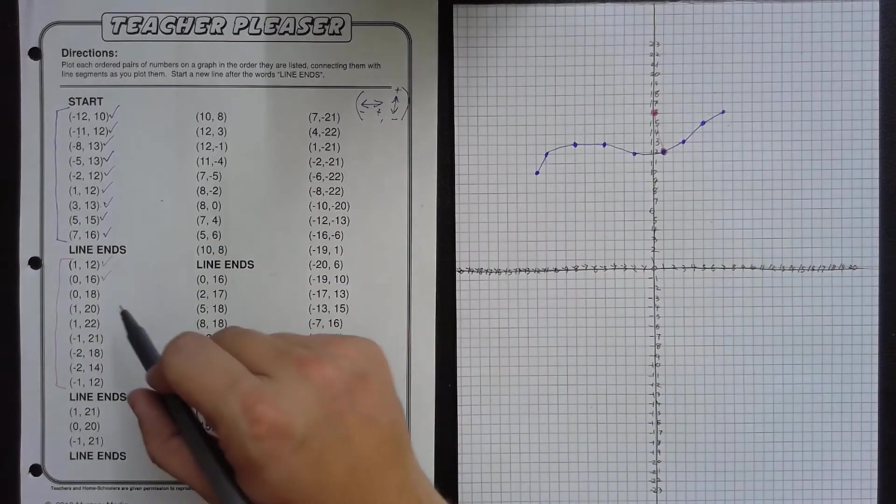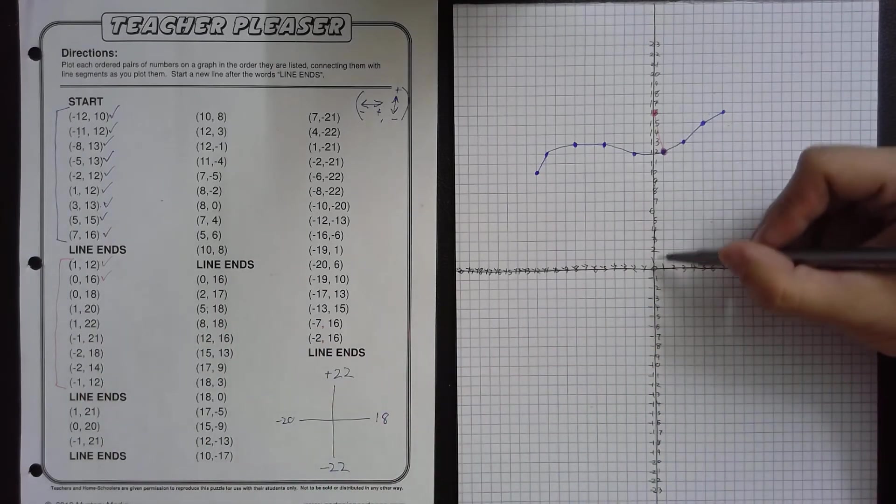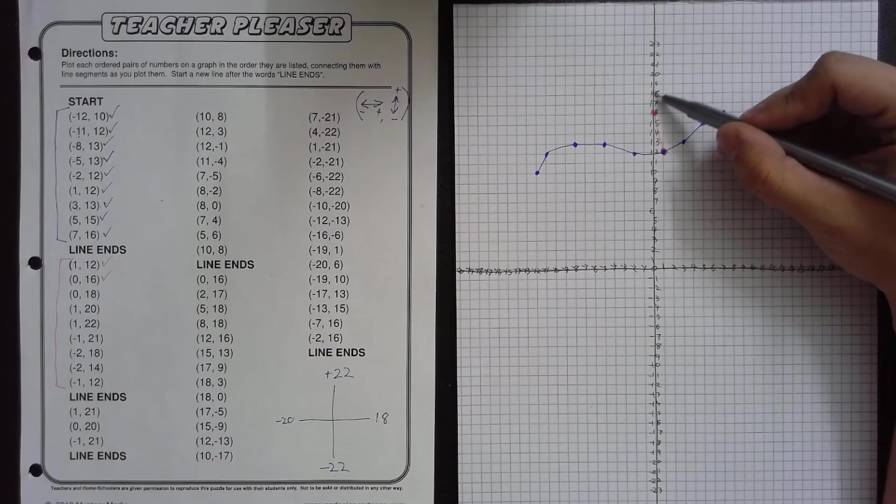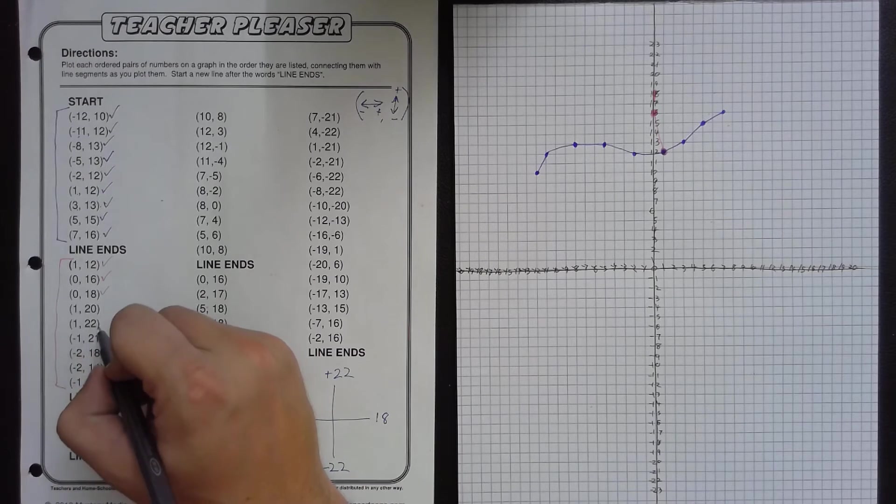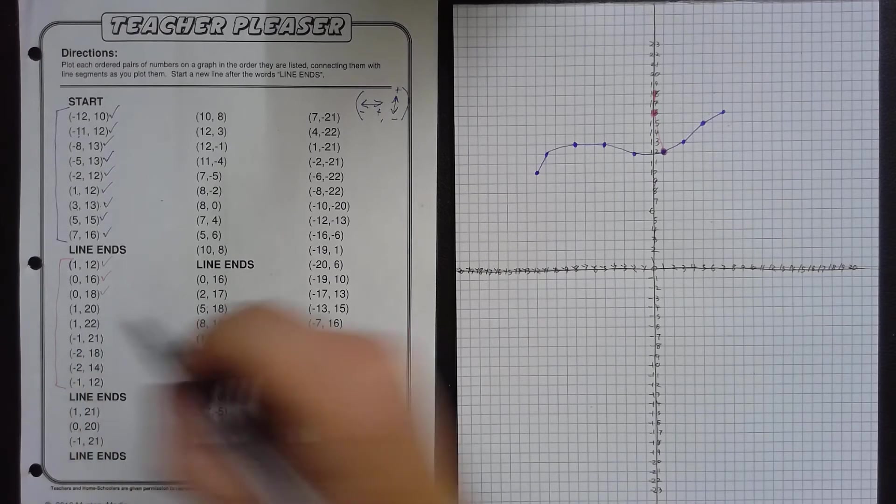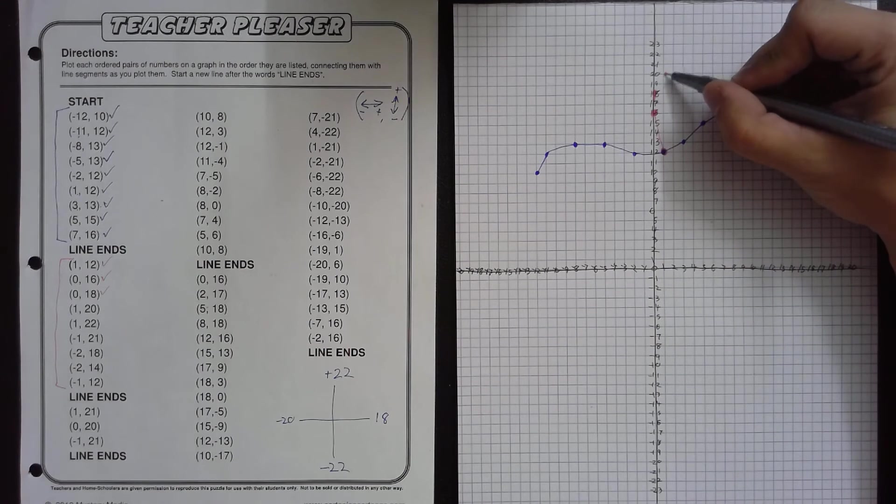After 0, 16 is 0, 18. So again, no left, no right, just straight up to 18. Connect those dots. And then 1, 20. So 1 to the right, 20 up. And that will be right here.